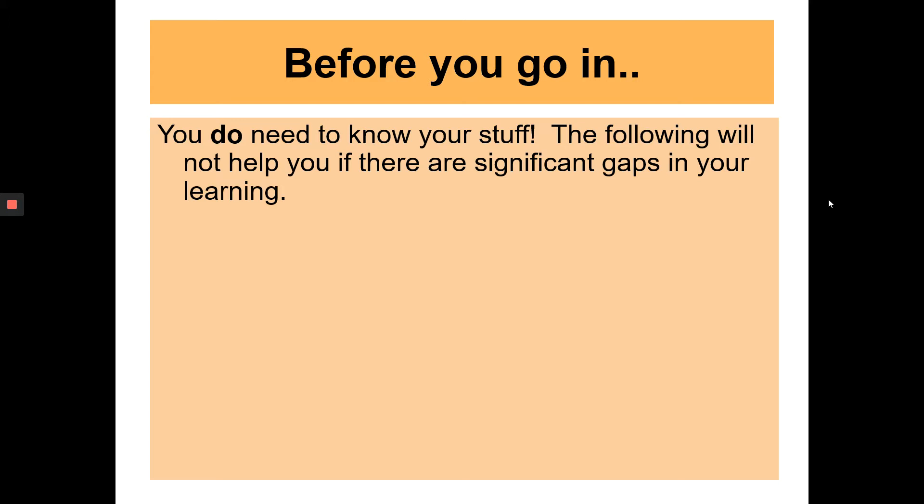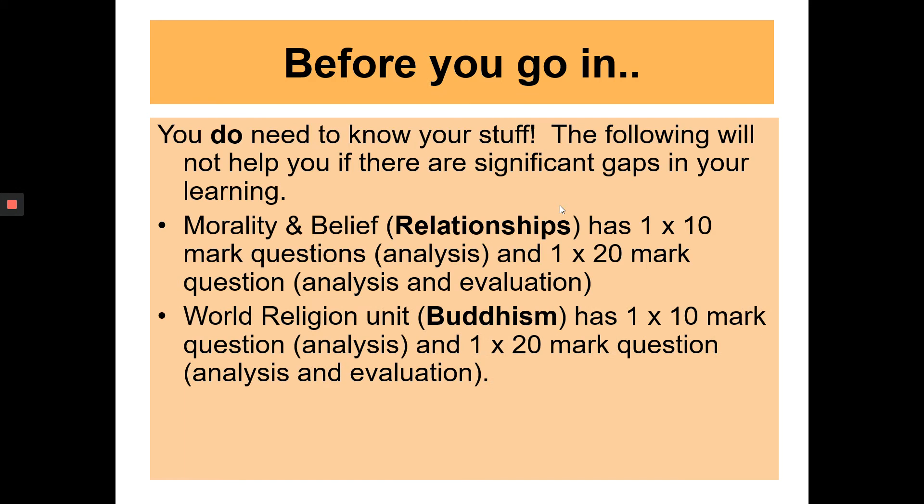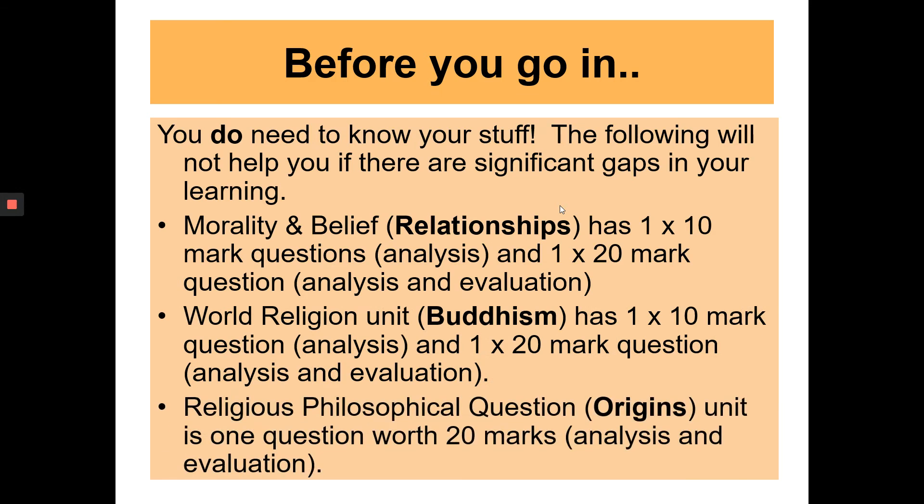It's really not too complicated. It's a formula to learn and then working out how to do it and then doing it. It's really okay. You can definitely do it. So before you go into the exam of course you need to know your stuff. It's not going to be helpful if there are significant gaps in your learning. So there are three units in Higher RMPS. There's the morality and belief unit and what we do for this unit is relationships. This is the one that we have started.